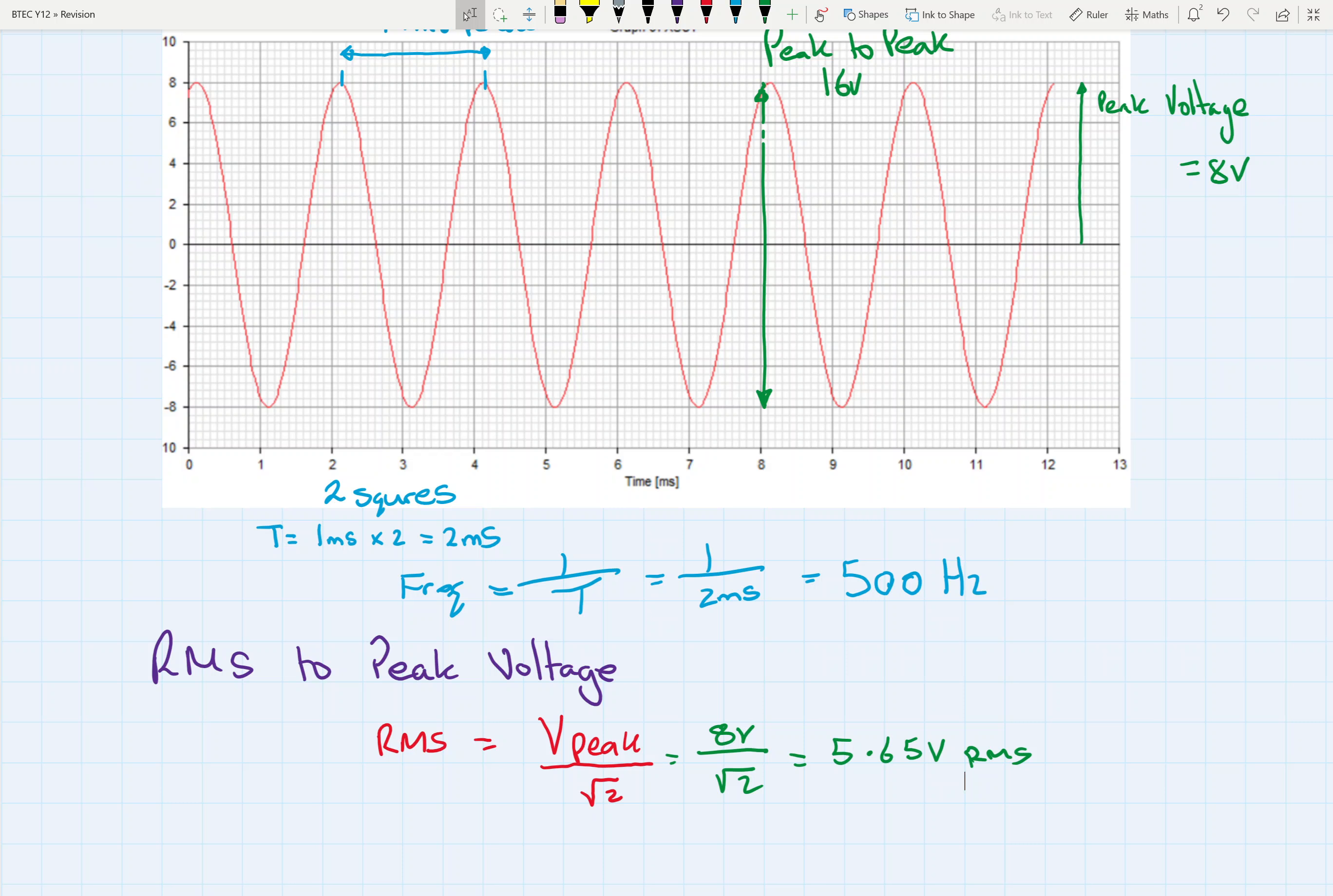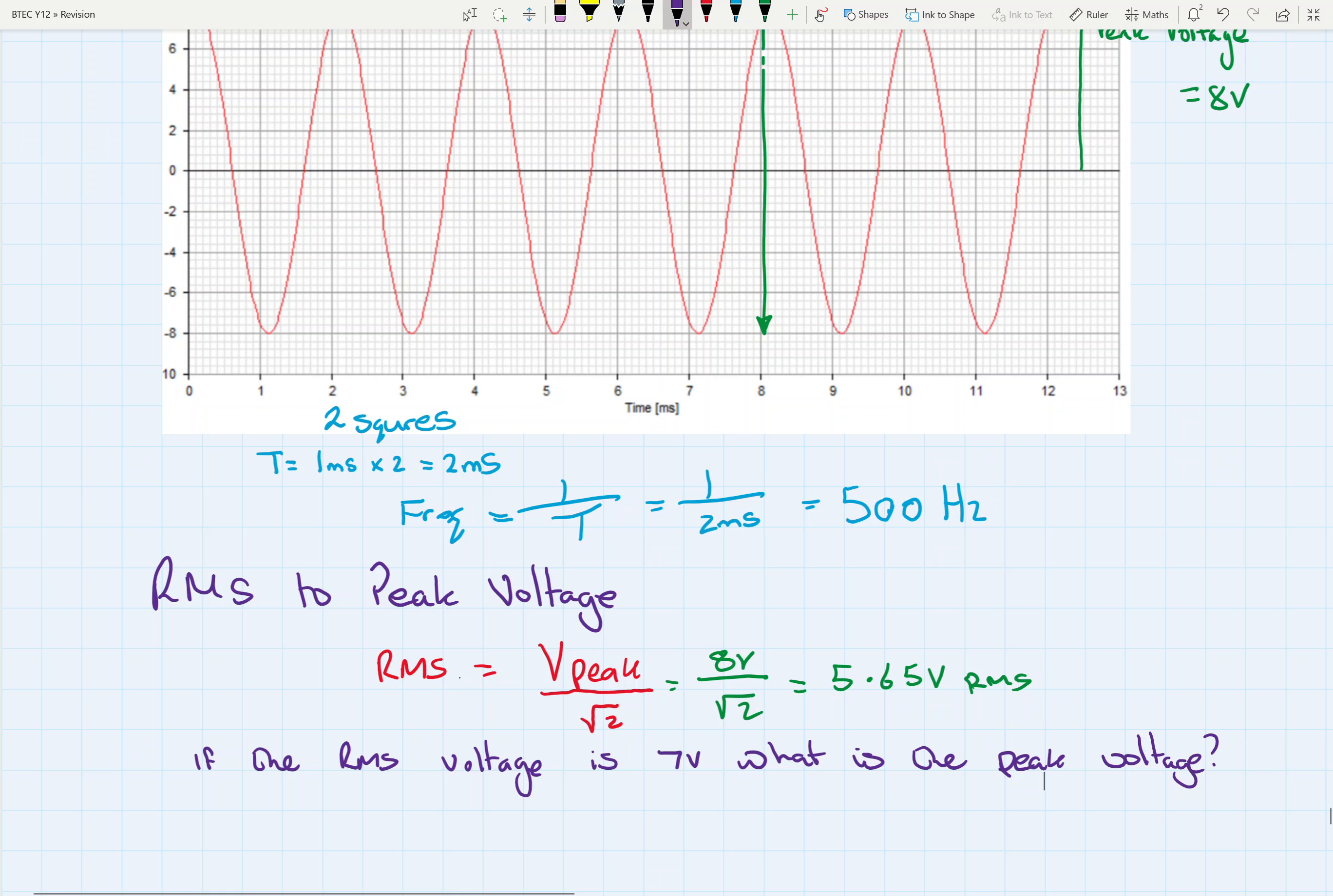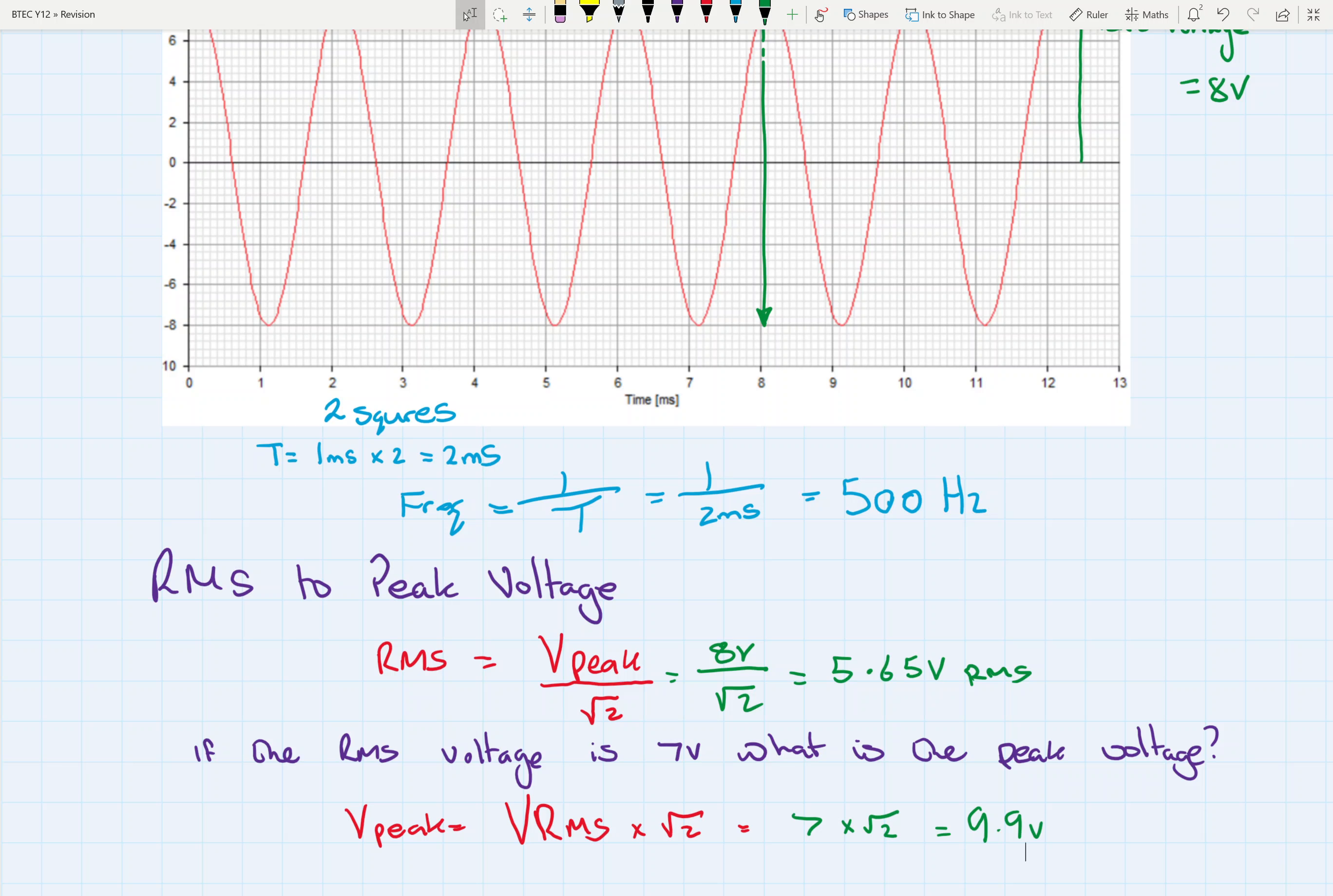We'll do one vice versa. So if we have 7 volts, 7 volts RMS, and we want to find out the peak voltage, then we can do it backwards way on. In this case, voltage RMS times by root 2. So 7 times root 2, which equals 9.9 volts.